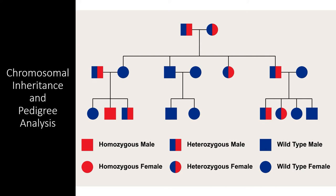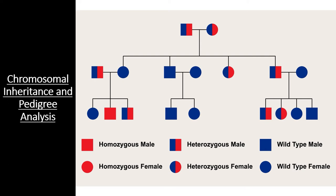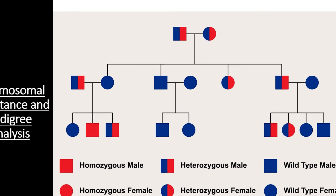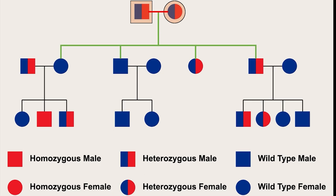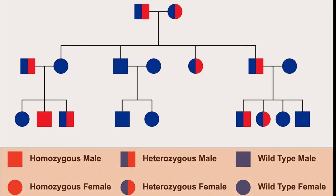For the AP test, you will need to understand how to read a pedigree and determine the type of genetic condition that is present. A square represents a male, while a circle represents a female. Horizontal lines between two individuals represent a pair of individuals making offspring, whereas vertical and horizontal lines above individuals represent different sibling relationships. Keep in mind that some pedigrees only show phenotype, which can be a little more difficult to decipher.